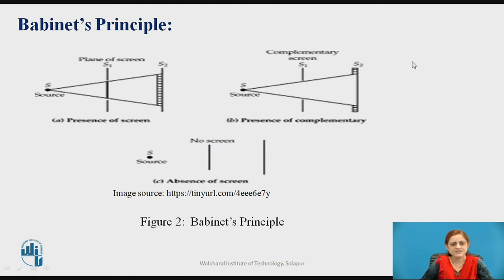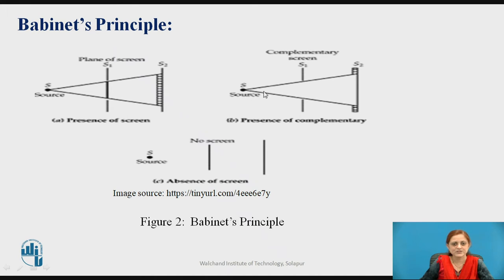Babinet's Principle discusses three different cases. It depends upon the source placed at a point, the plane of the screen denoted as S1, and the observation plane denoted as S2. Figure A shows the presence of a screen between the observation plane and the source. The second figure uses a complementary screen between the source and observation plane, and the absence of any screen is the third case.